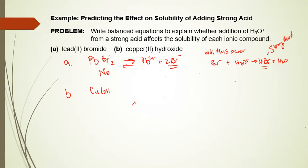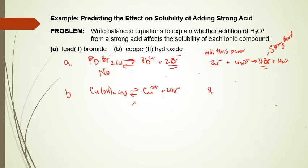For copper(II) hydroxide, Cu(OH)2(s) → Cu²⁺ + 2OH⁻. When H3O⁺ is added, it reacts with OH⁻ in a neutralization reaction: H3O⁺ + OH⁻ → 2H2O. Because this neutralization reaction does occur, adding a strong acid will increase the solubility of copper(II) hydroxide.